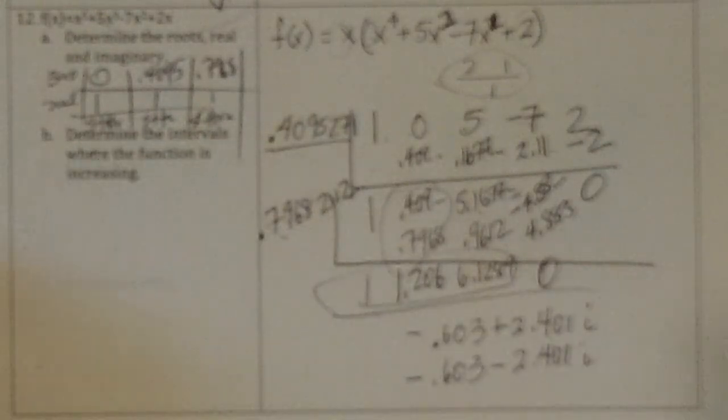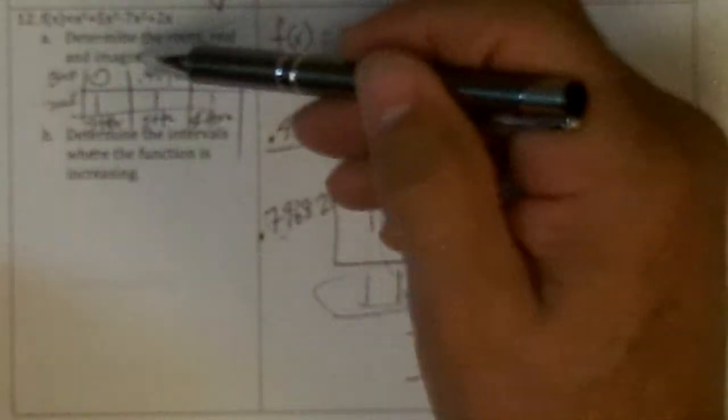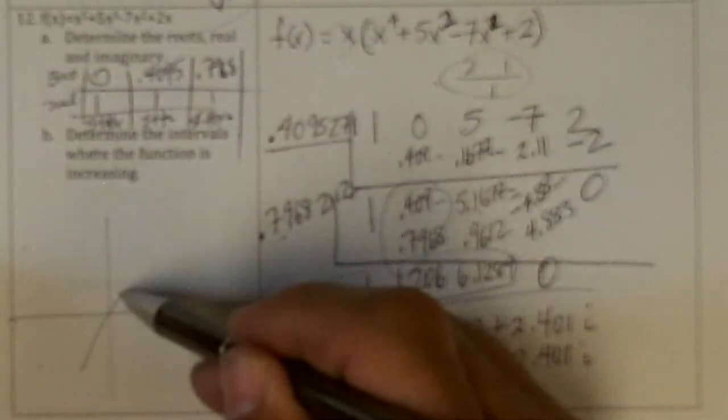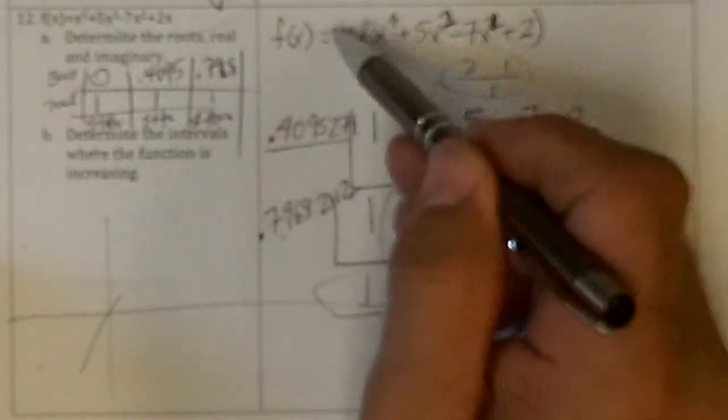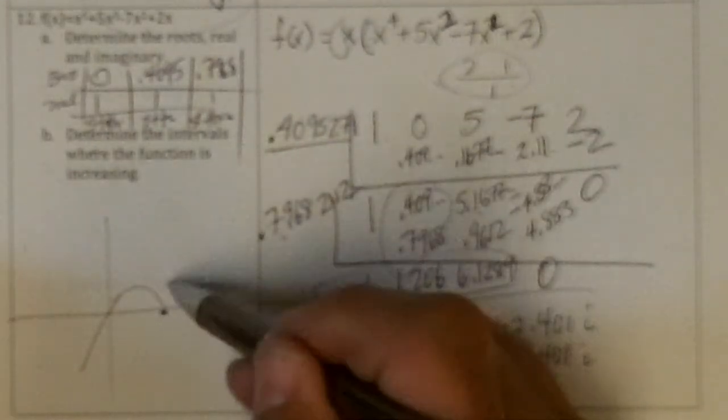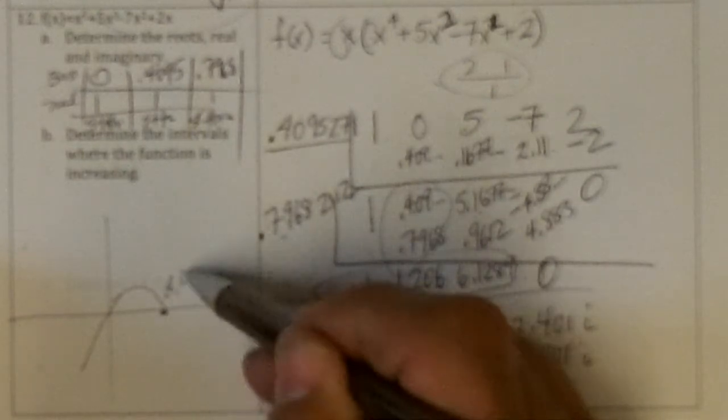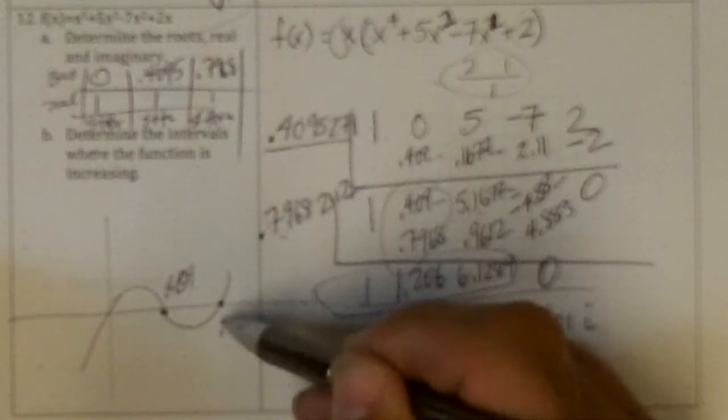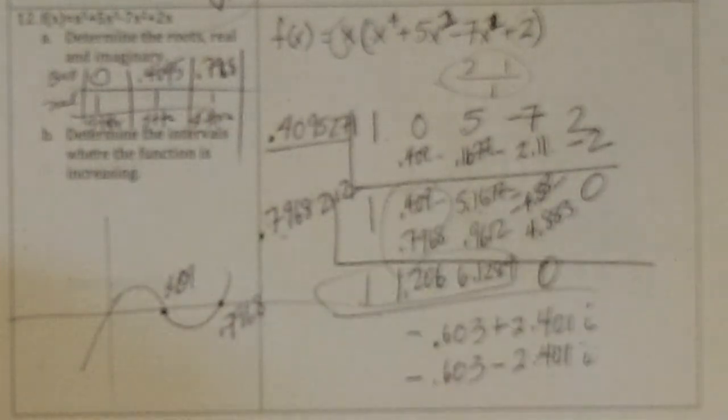So now. We have a fifth degree. It crosses at zero. We've determined that right away. It comes down. It crosses at .409. Crosses again at .7968.